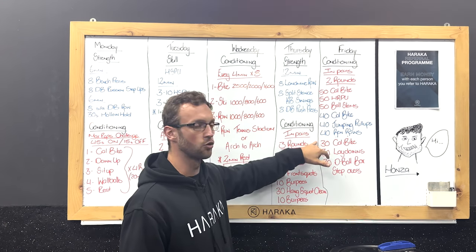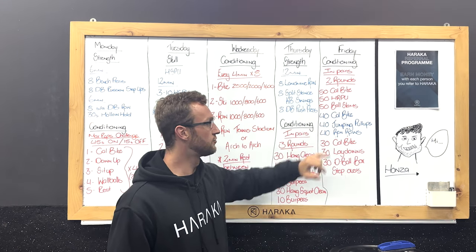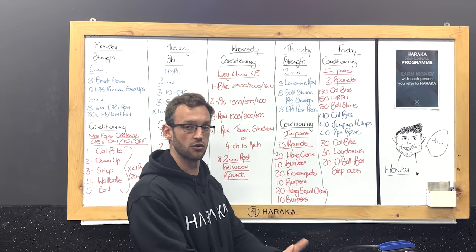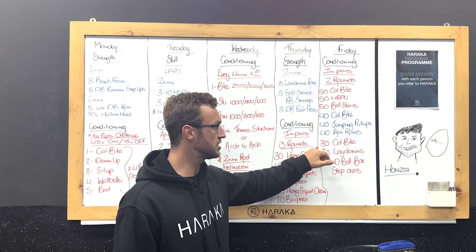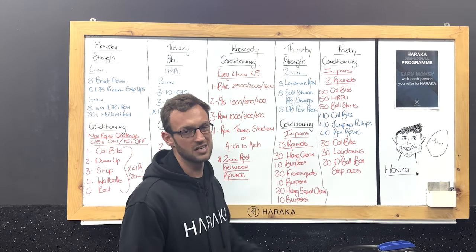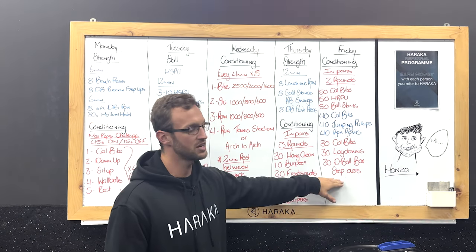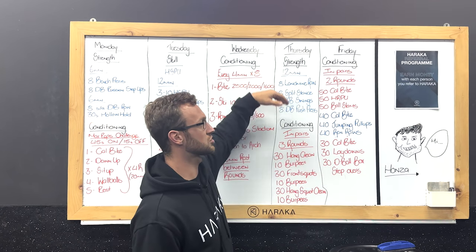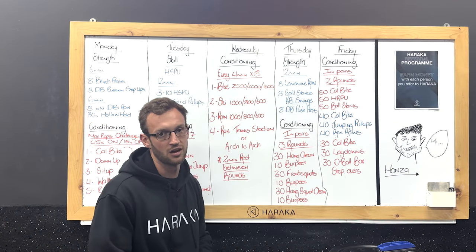Then we have 40, 40, 40. So 40 cal row, 40 jumping pull-ups, and then 40 renegade rows. Last one is your 30s. 30 calories on the bike, 30 laydowns, 30 D-ball box step overs. If you manage to get there to the bottom we're going to start at the top again and we're going to work it through another round.